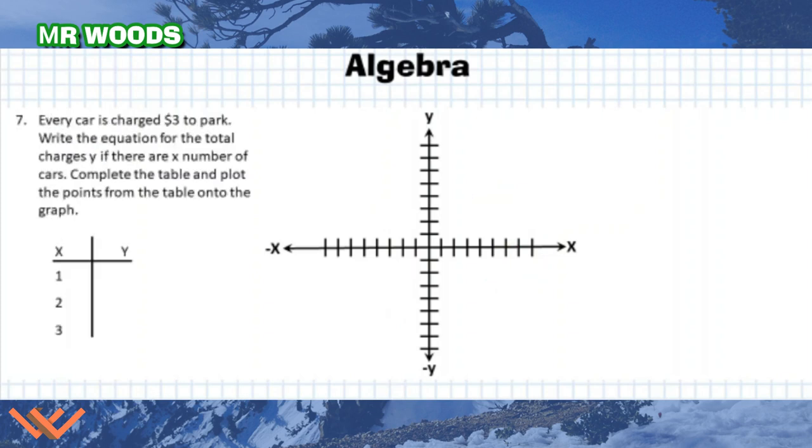Number 7. Every car is charged $3 to park. Write the equation for the total charges y if there are x number of cars. Complete the table and plot the points from the table onto the graph. This is fairly simple because for every car is charged $3. So therefore, y is equal to x times 3 or 3x.